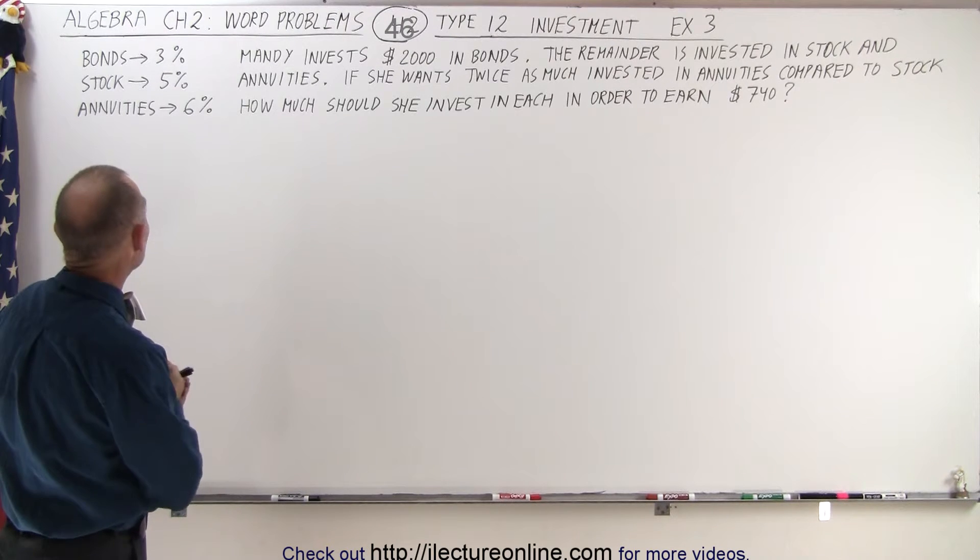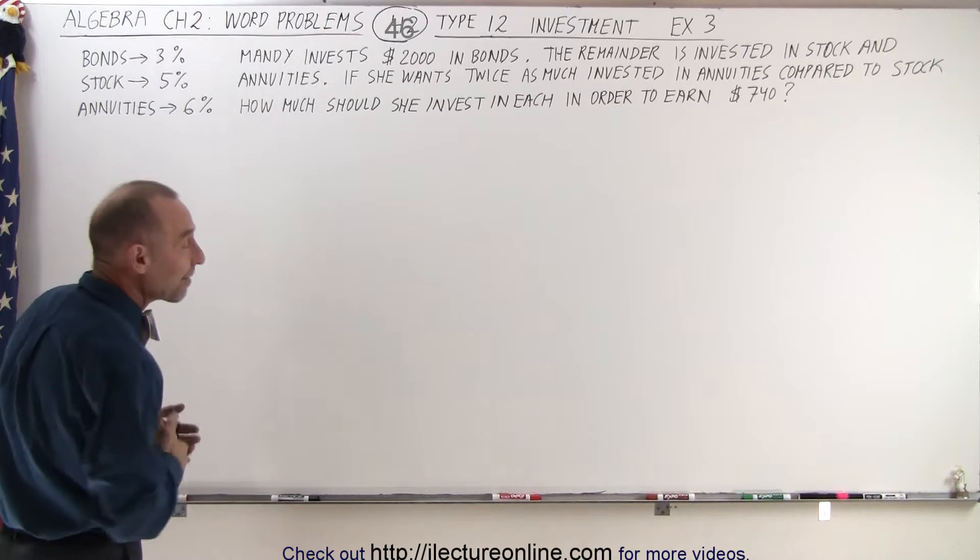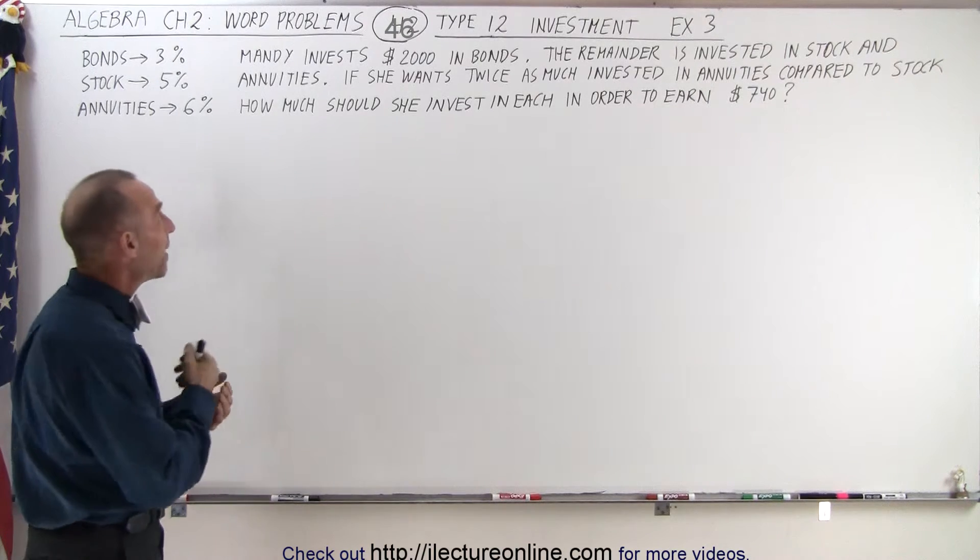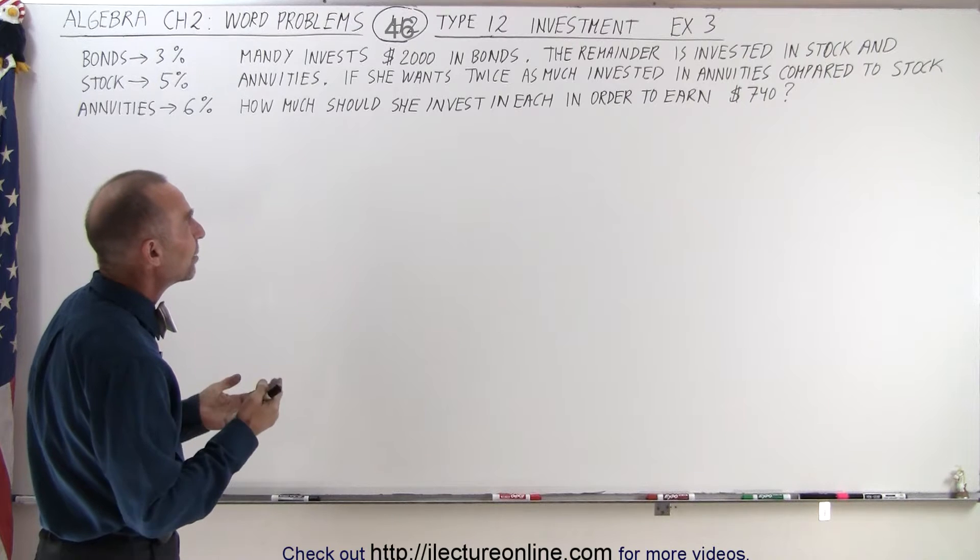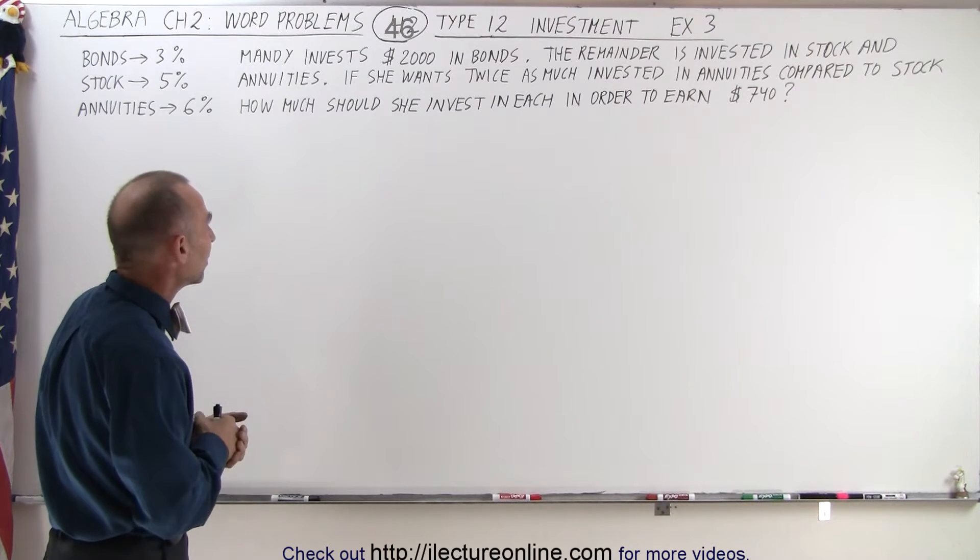We have three investments: bonds, stocks, and annuities at 3%, 5%, and 6%. Mandy invests $2,000 in bonds. The remainder is invested in both stock and annuities.